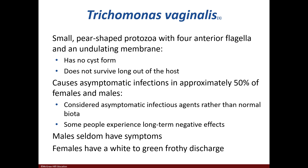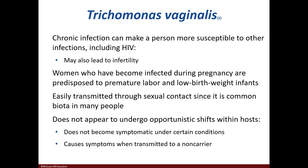Trichomonas vaginalis is a protozoal infection. In half of cases, patients are asymptomatic. Males generally don't have symptoms, while women experience a white to green frothy discharge. Chronic infections may increase chances of acquiring AIDS or infertility. The mode of transmission is sexual contact. T. vaginalis does not undergo shifts inside the host and can be treated with metronidazole.